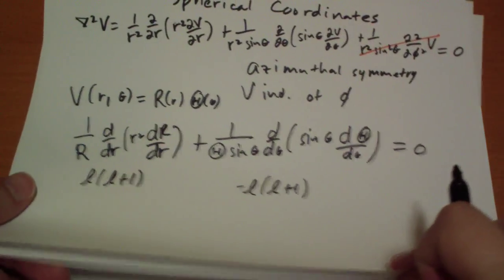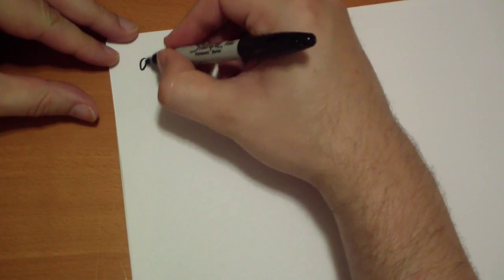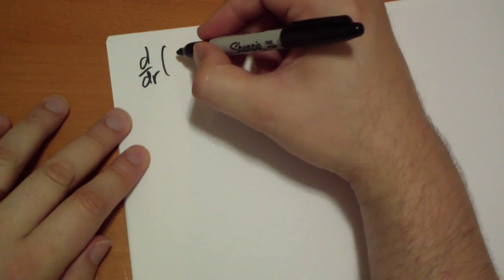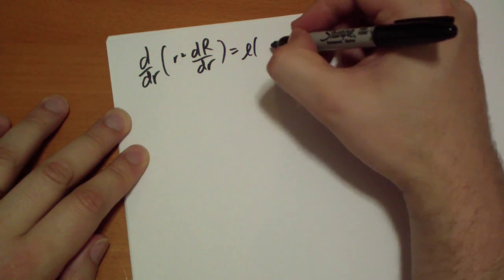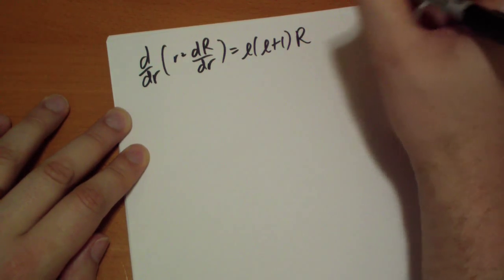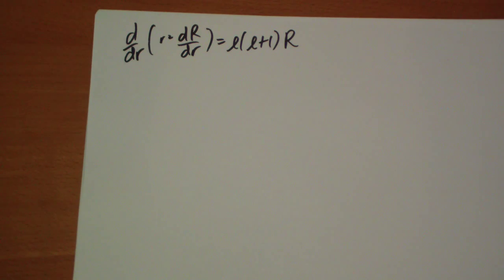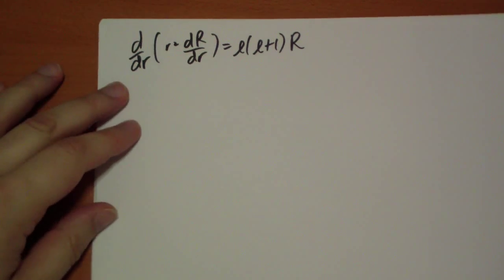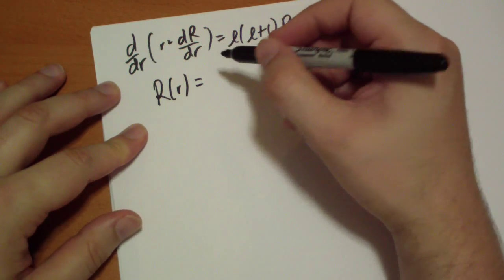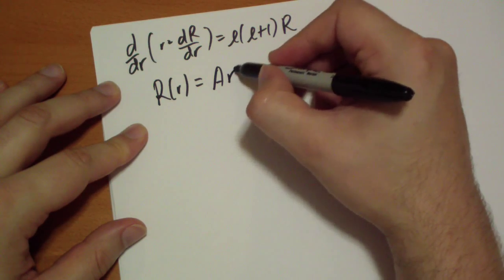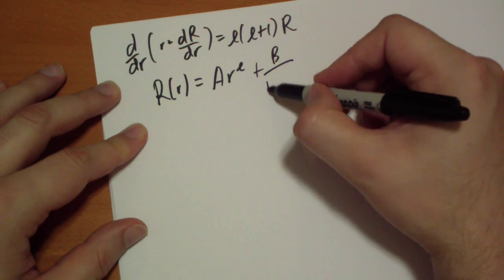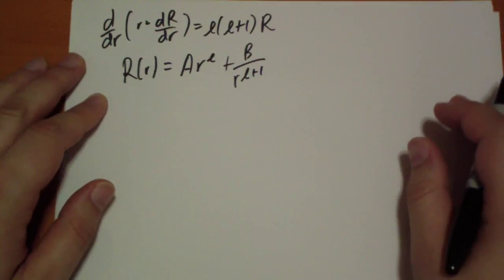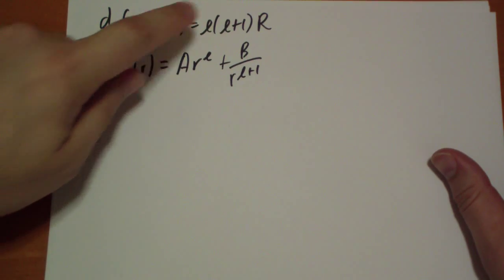So, for the r term, we just multiply both sides by r, so we get d by dr of r squared d capital R by dr equals l times l plus 1 of capital R. And the general solution to this is that R of r is equal to some constant times r to the l plus b, another constant, over r to the l plus 1. You take this and apply this derivative, you get that.